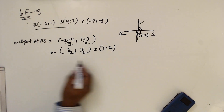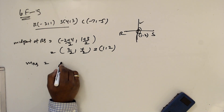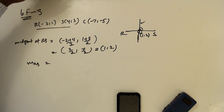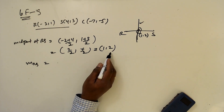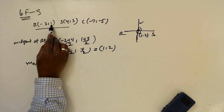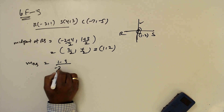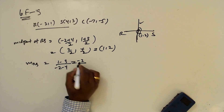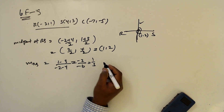Now I want to find the gradient. M1, the gradient of RS, equals y1 minus y2 over x1 minus x2, which is 1 minus 3 over minus 2 minus 4. That is minus 2 over minus 6, which equals 1 over 3. So the perpendicular gradient is minus 3.